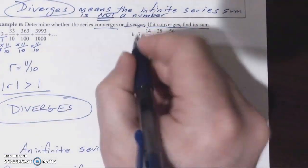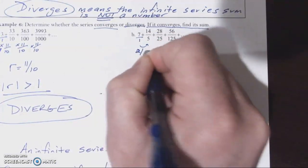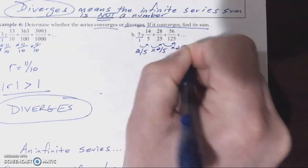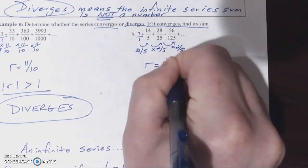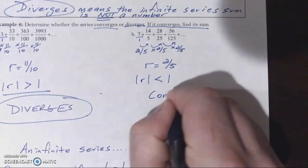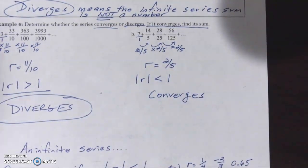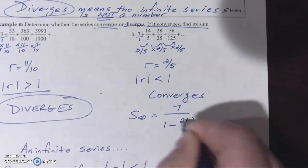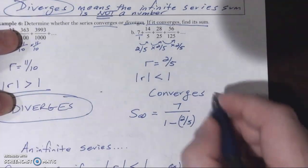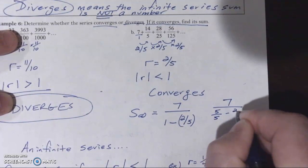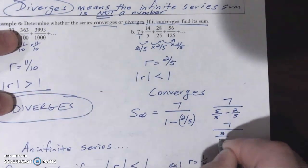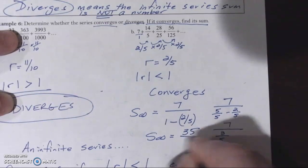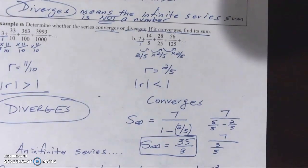For part b, the first term is 7 over 1. We multiply by 2 fifths to get the next terms — 7 times 2 is 14, 1 times 5 is 5. The common ratio is 2 fifths; the absolute value is less than 1, so it converges. Using our formula, the sum is 7 over 1 minus 2 fifths. Getting common denominators: 7 over 5 fifths minus 2 fifths equals 7 over 3 fifths. Dividing by a fraction means multiplying by the reciprocal, so the sum of this infinite series is 35 over 3.